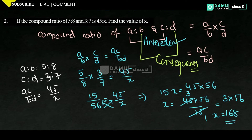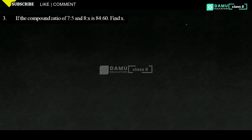Thanks for watching. Please subscribe. As told in the previous question, this is the second one. The third question is: the compound ratio of 7 is to 5 and 8 is to X is 84 is to 65. Find the value of X. As told in the second question, we use the formula of compound ratio.